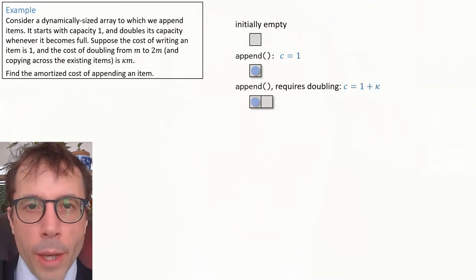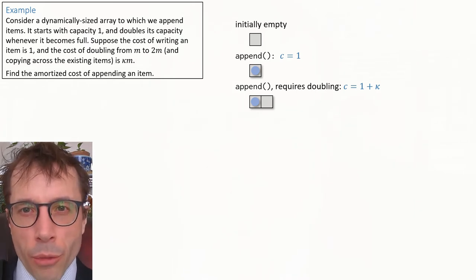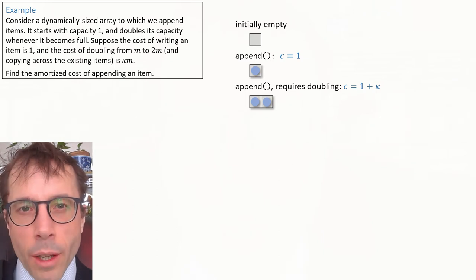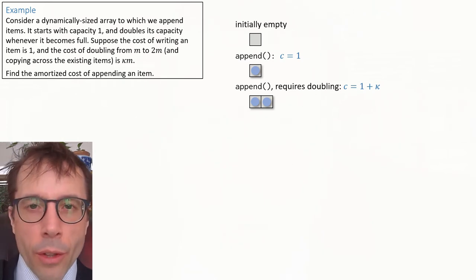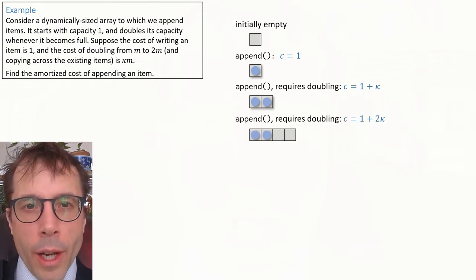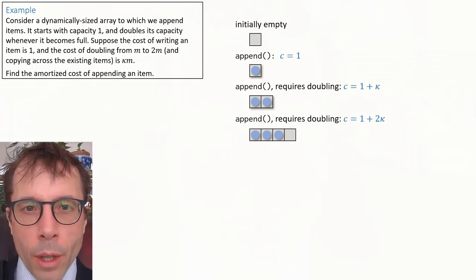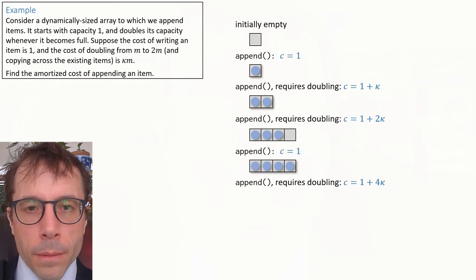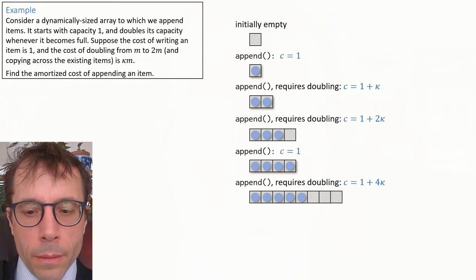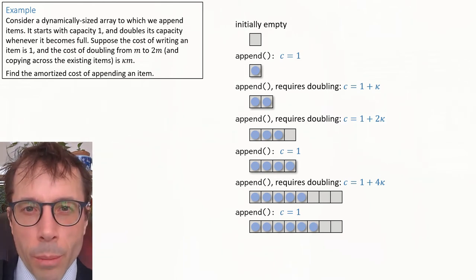Next item we want to append, we first have to double the array. The cost of doubling from size one to size two is kappa. And the cost of writing in the new item then is one. So the total cost of this append is one plus kappa. And the next item also requires a doubling before we write in the item. And the total cost is one plus two kappa and so on. Okay, so that's the data structure that this question is talking about.